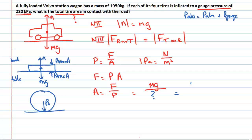So then we've got mg. So we've got 1950 kilograms times 9.8. We can divide that by the gauge pressure which is 230 kilopascals. We'll multiply that by 10 to the 3 and turn that into pascals. Now everything is in SI units.